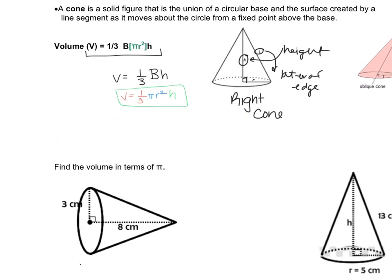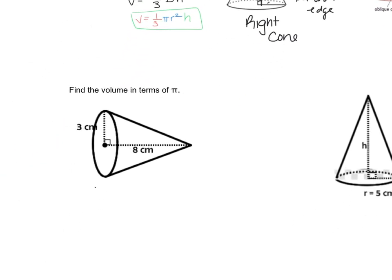Let's dive into some examples. We want to find the volume in terms of π, which means we do not want to type π in our calculator. So the first step is to write V equals one-third Bh. I'm going to zoom in.